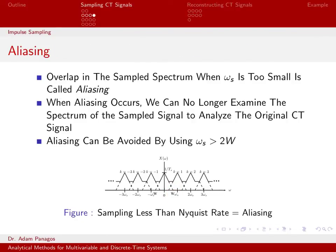This overlap, when we sample too small, is what we call aliasing. And this is bad because when aliasing occurs, this means that we can't look at this picture and tell what the original continuous time signal spectrum is. And that's a bad thing.